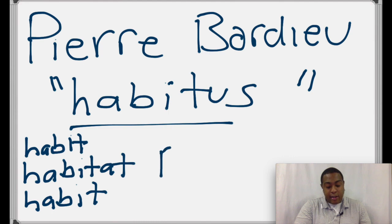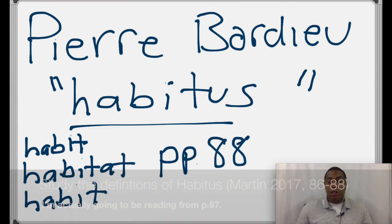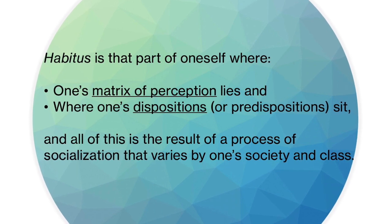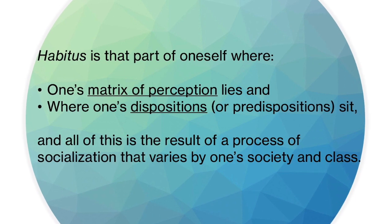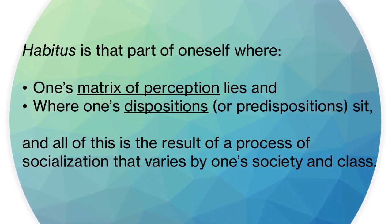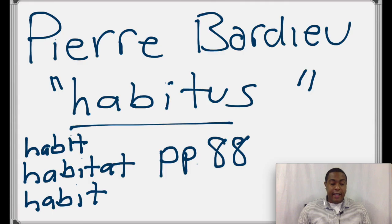And for his definition, I'm going to turn you to page 88 in Martin's second edition of A Critical Introduction to the Study of Religion. Because there, in our book, he says the following, and I'm going to read it. This is toward the bottom in italics. Habitus is that part of oneself where one's matrix of perception lies and where one's dispositions or predispositions sit. And all of this is the result of a process of socialization that varies by one's society and class. Habitus is that part of oneself where one's matrix of perception lies and where one's dispositions or predispositions sit. And all of this is the result of a process of socialization that varies by one's society and class. This is a key definition for us that really gets to the very idea of why our view of the world does not change without a tremendous amount of work.